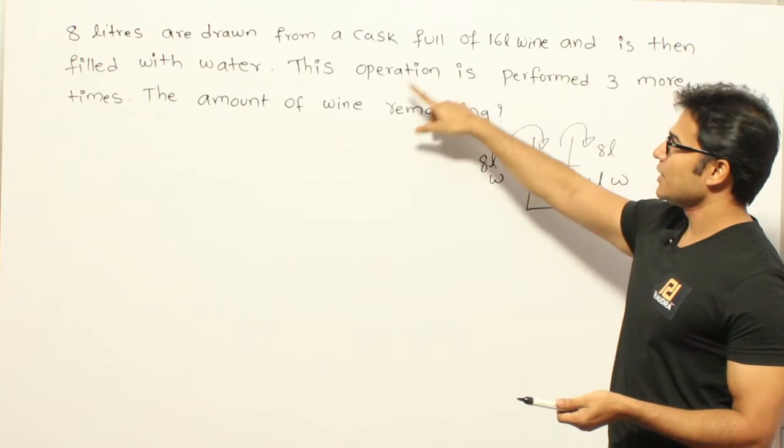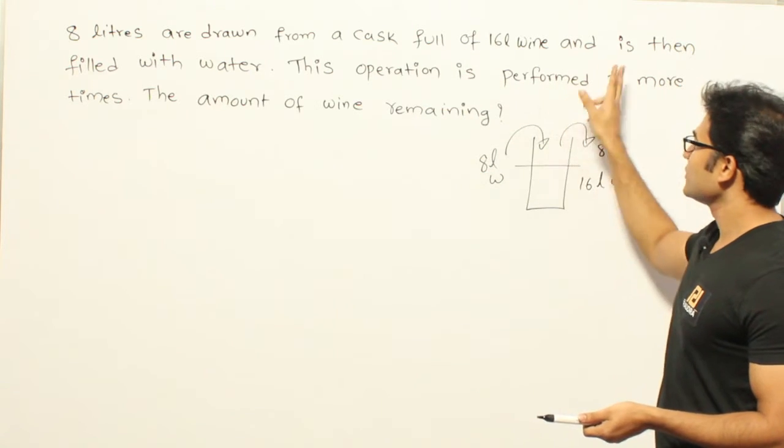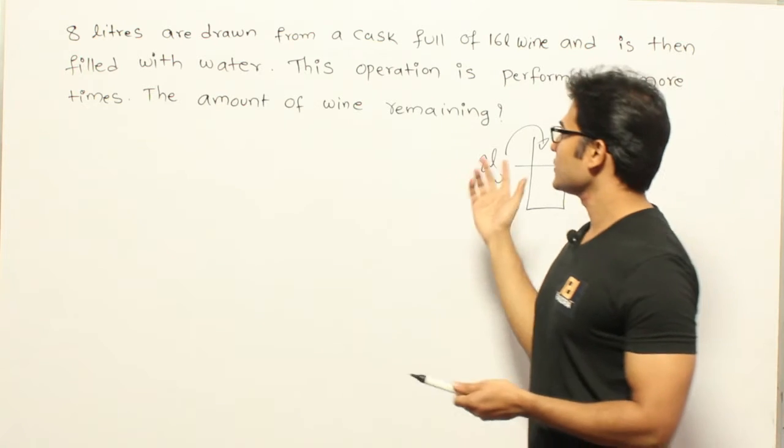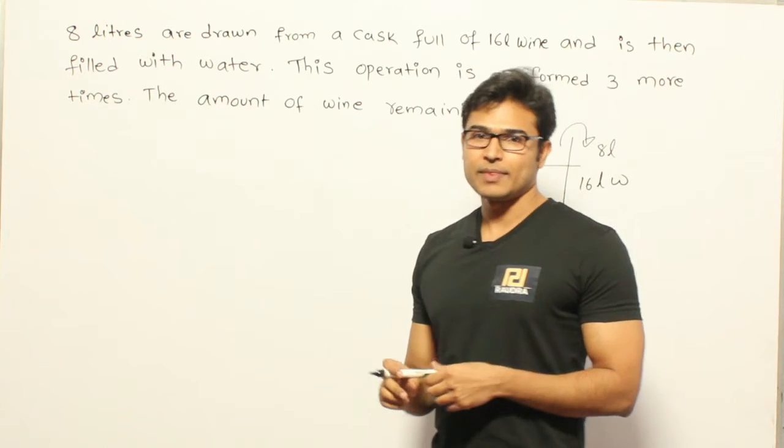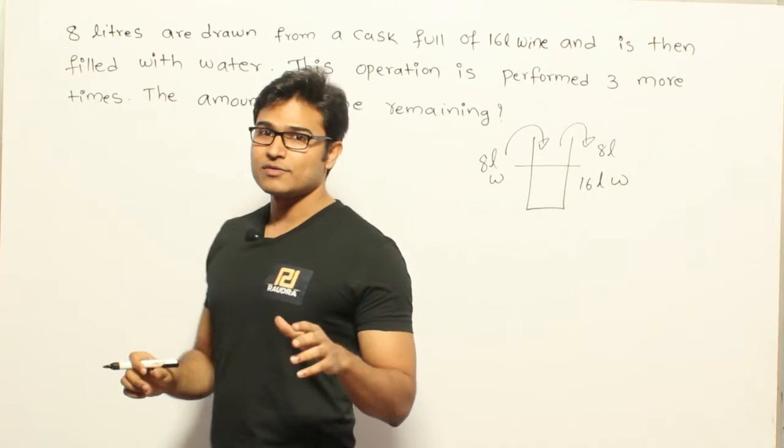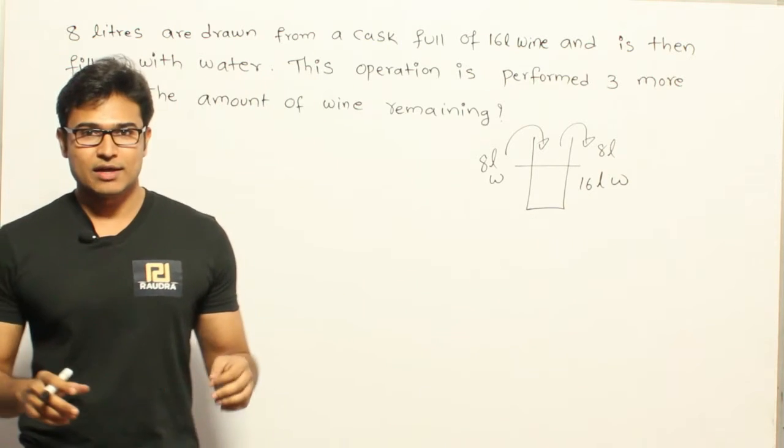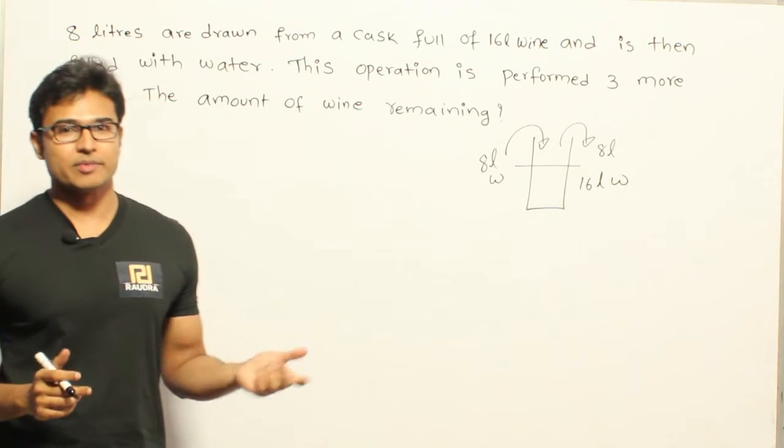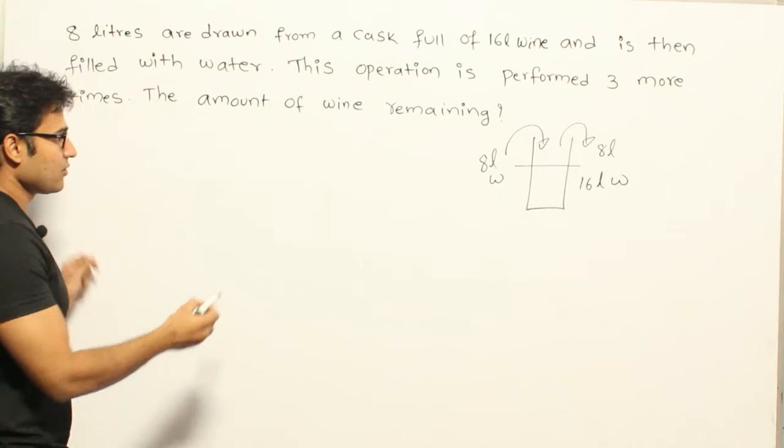And they are saying that they have initially done it one time and again they are repeating this for 3 more times. Then they are asking us what is the amount of wine remaining. So if you can remember the process that we did earlier, you go by that process. Otherwise if you remember the formula, it will be easier. So in formula what we discussed is...